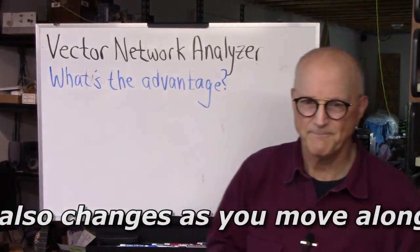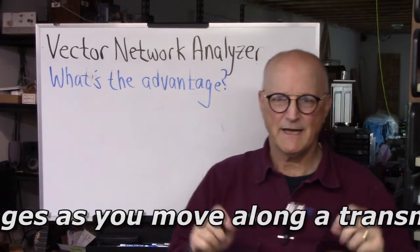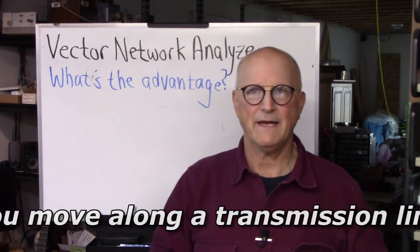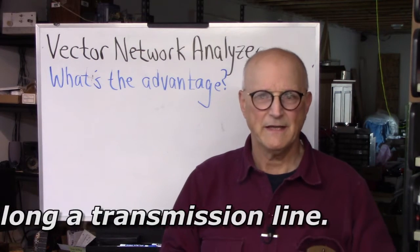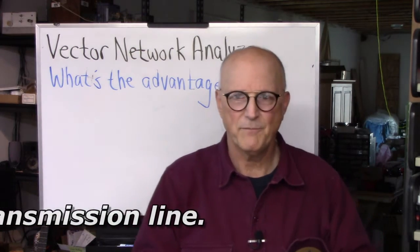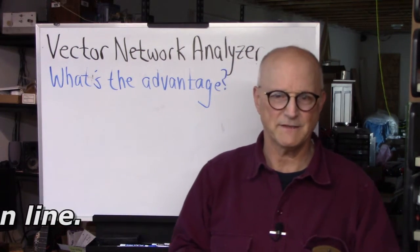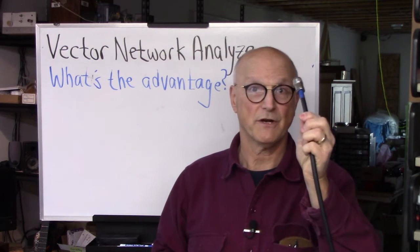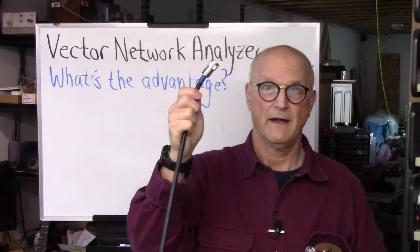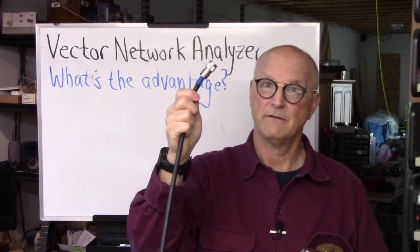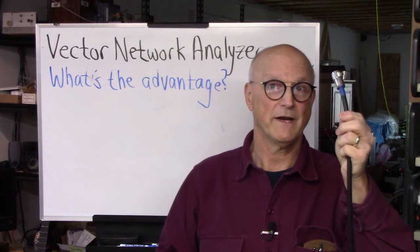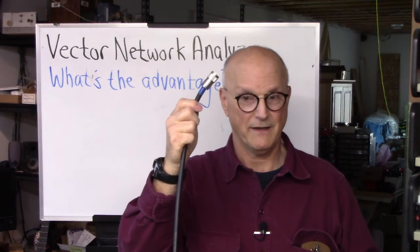So here's a case in point. A transmission line that is a quarter wavelength at a particular frequency is often used as an impedance transformation device. If it is shorted at one end, it looks like an open at the other. If it is open at one end, it looks like it's shorted at the other.